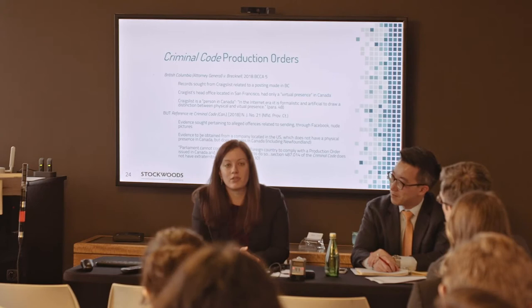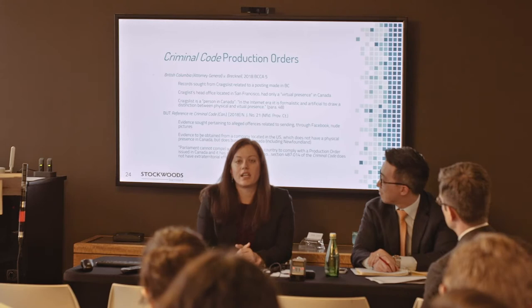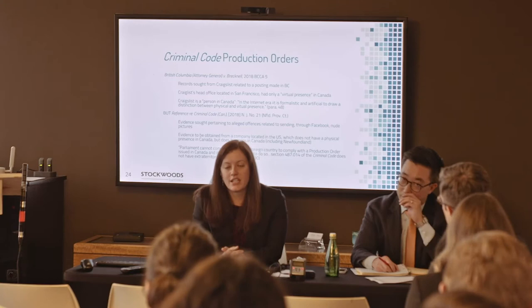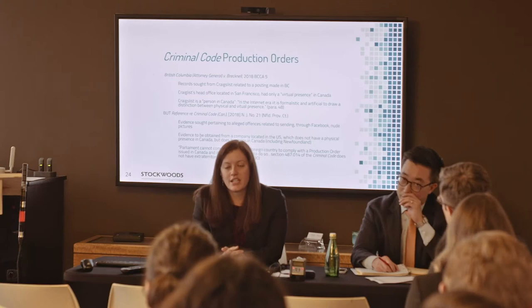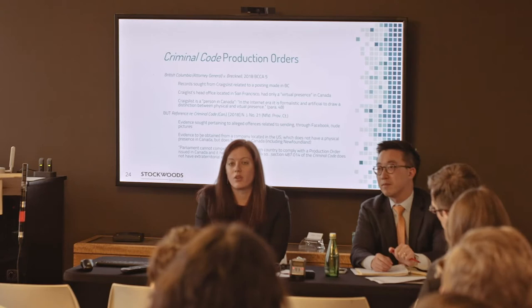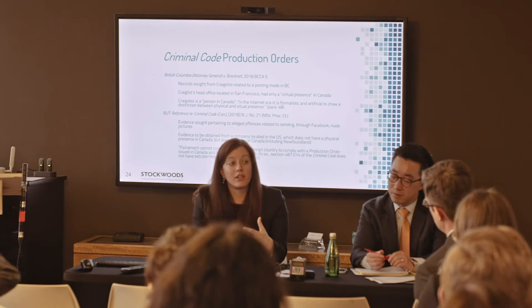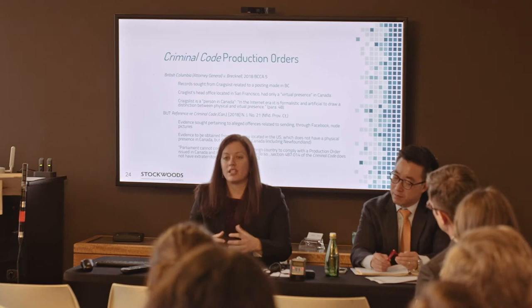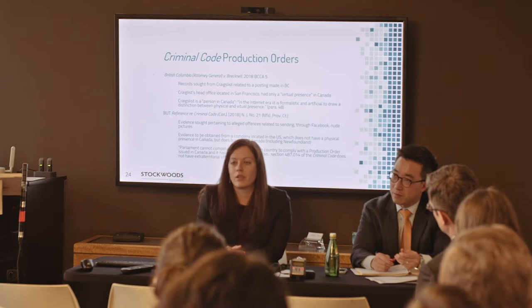The British Columbia Court of Appeal had a few things to say about the scope of this provision and the court's jurisdiction under this provision recently, in a case in which British Columbia law enforcement sought records from Craigslist related to a criminal investigation concerning a posting that had been made in British Columbia. The problem is Craigslist has its head office in San Francisco and has no office or operations physically in Canada. However, the British Columbia Court of Appeal found that having a virtual presence, as Craigslist does in British Columbia, was a sufficient connection to the jurisdiction to make Craigslist a person in Canada for the purposes of the production order.